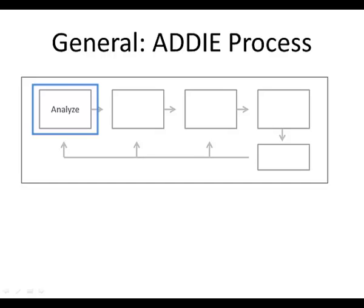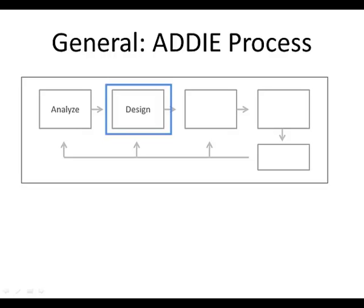Once an instructional designer has a good idea of their goals and where they want their learners to be, the next step is to Design the instruction. This means planning out exactly what strategies will be used, what medium will be used for the instruction, and how learners will interact with the materials. It's really a planning phase where instructional designers think deeply about what helps people learn.